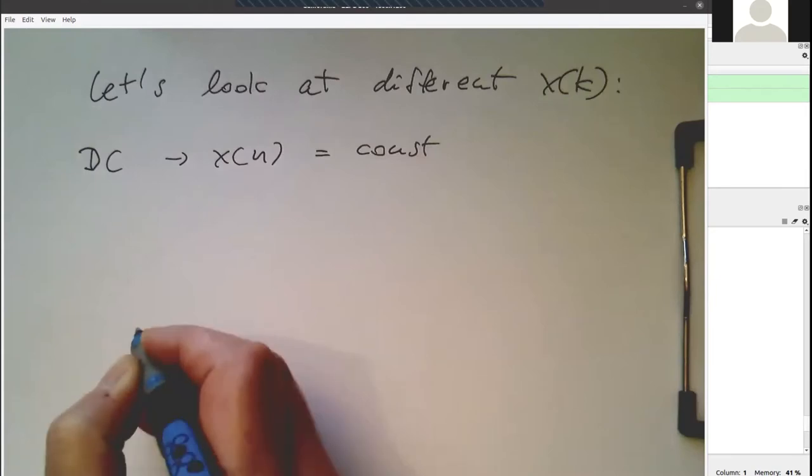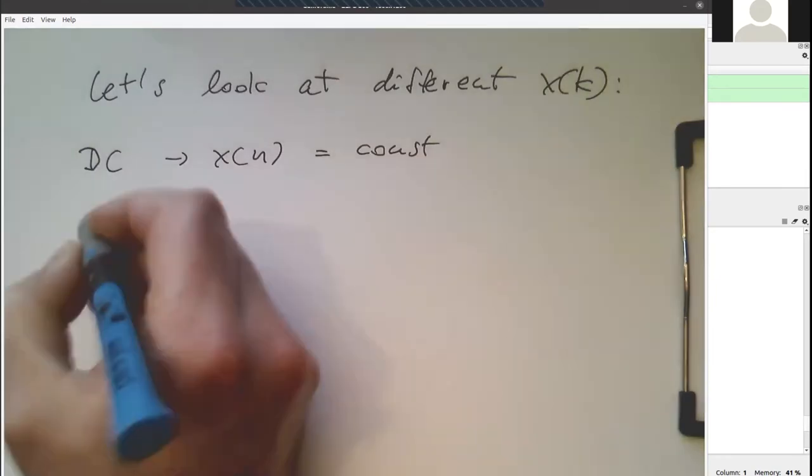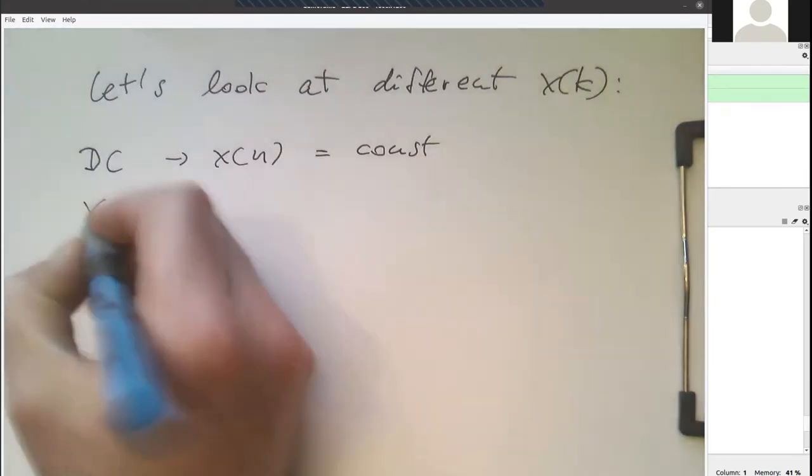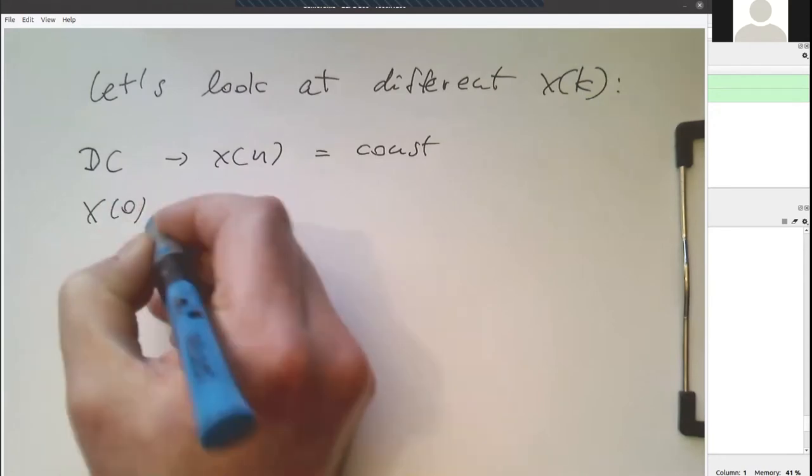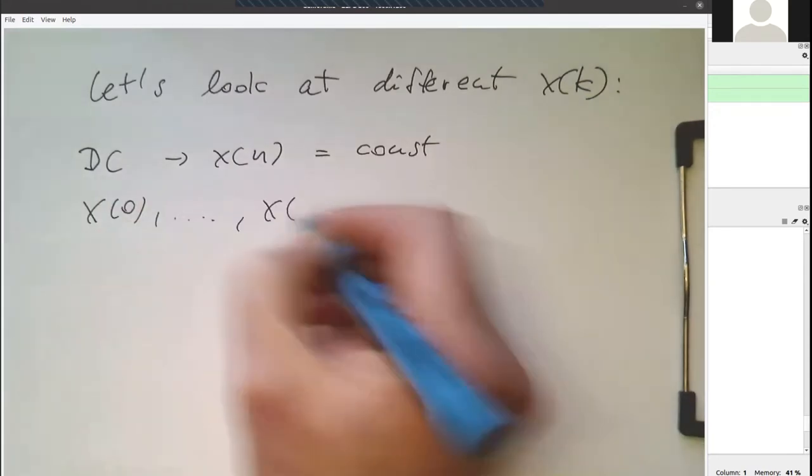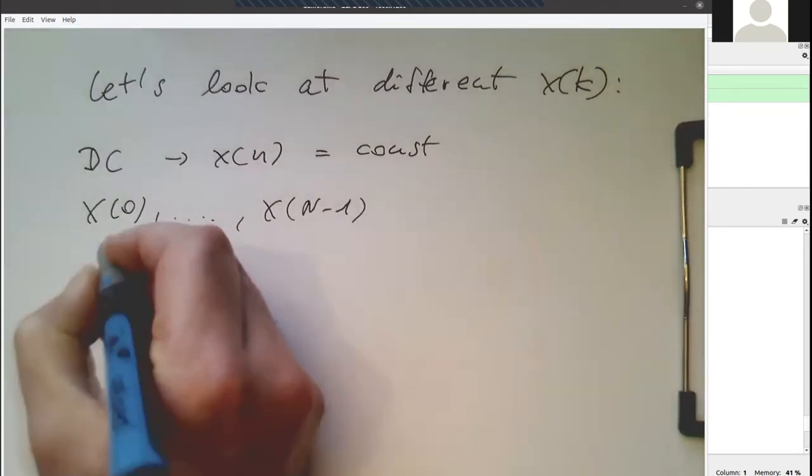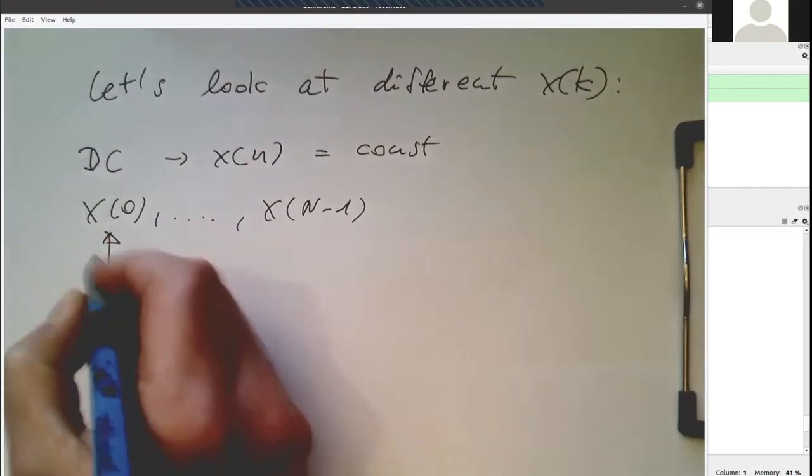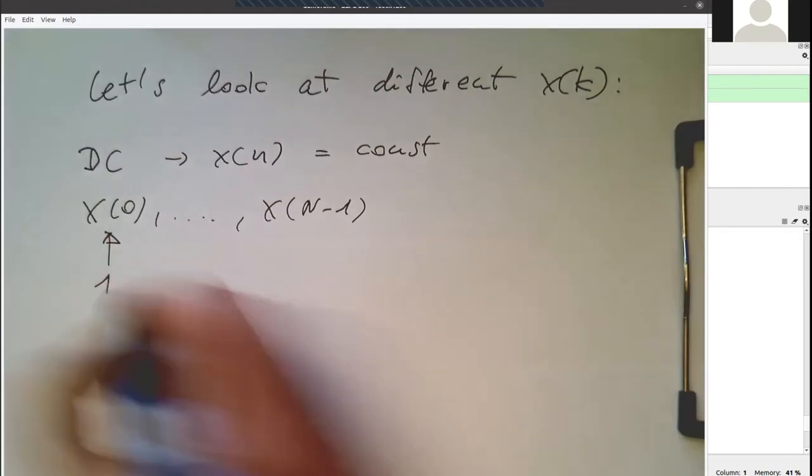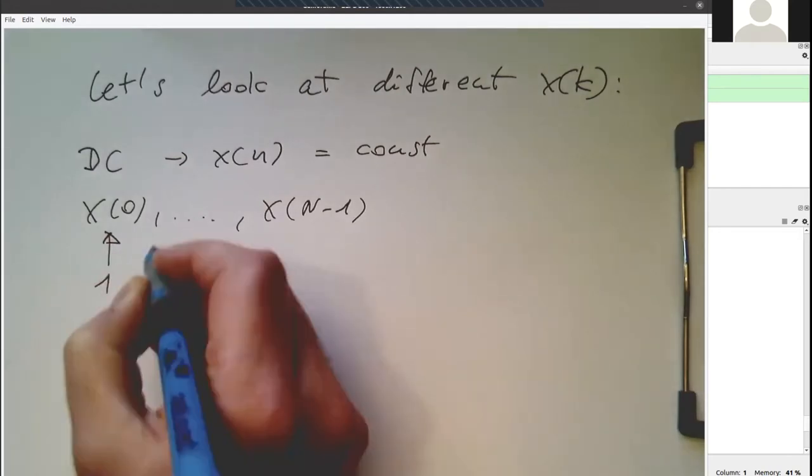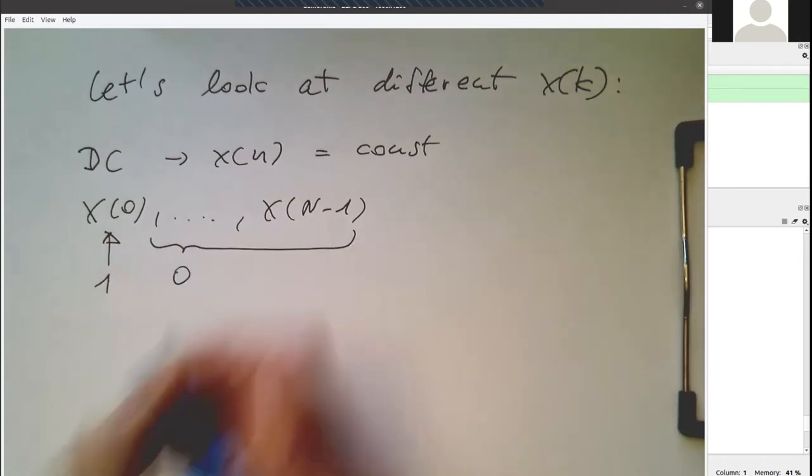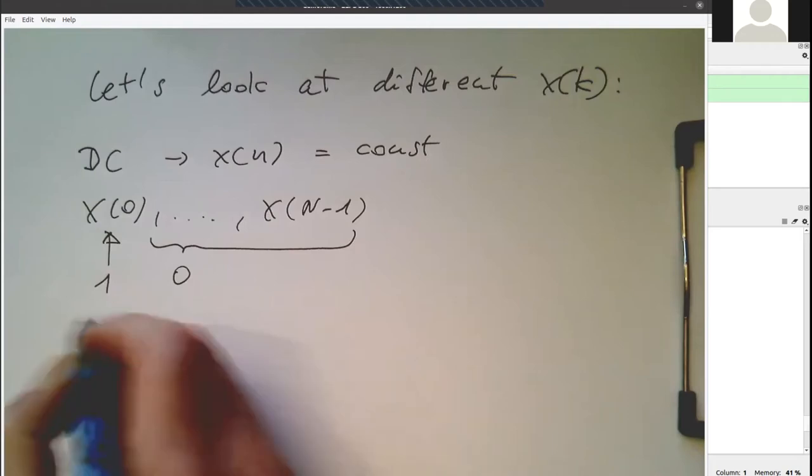So how do we do that? If we have our sequence here from x(0) to x(n-1), then we set this one, the first coefficient here to 1. And all the other coefficients here, we set them to 0. So we set this one to 0. So this is the first frequency coefficient, and this is the so-called DC coefficient.